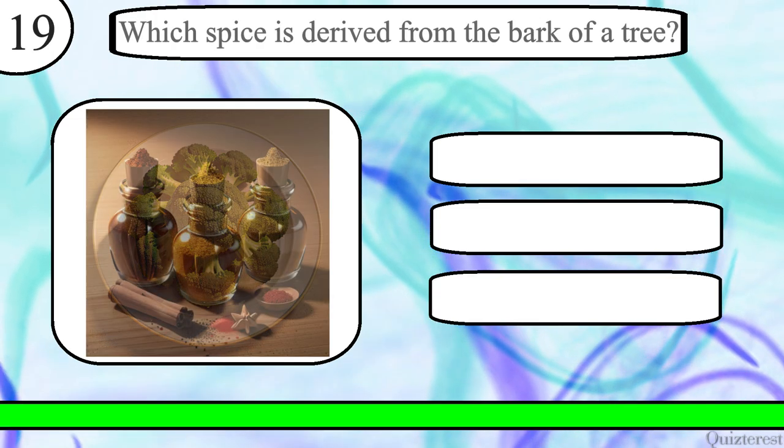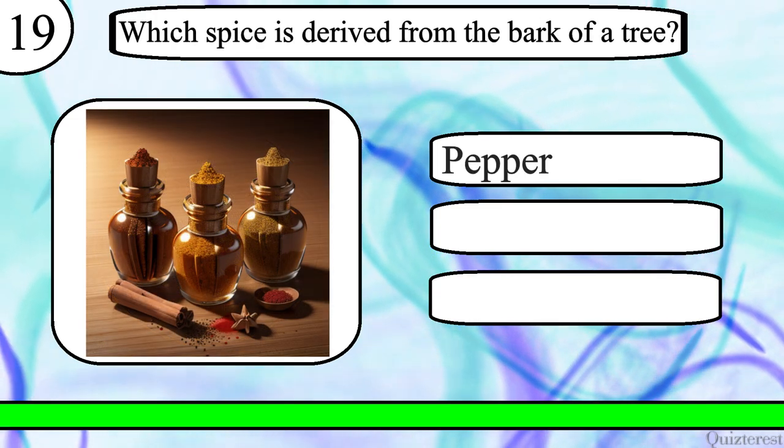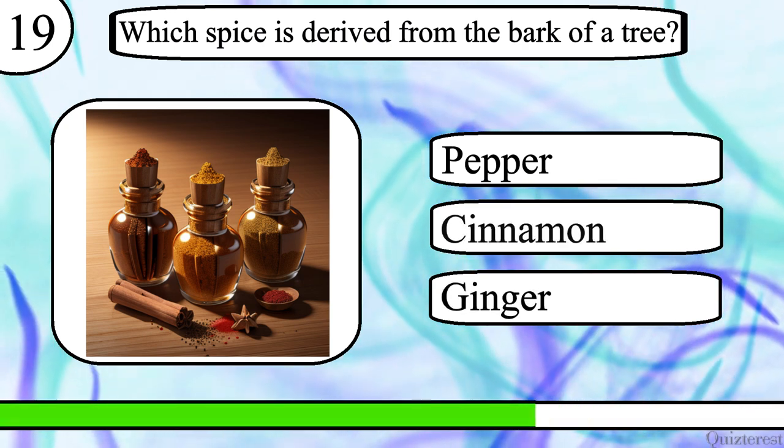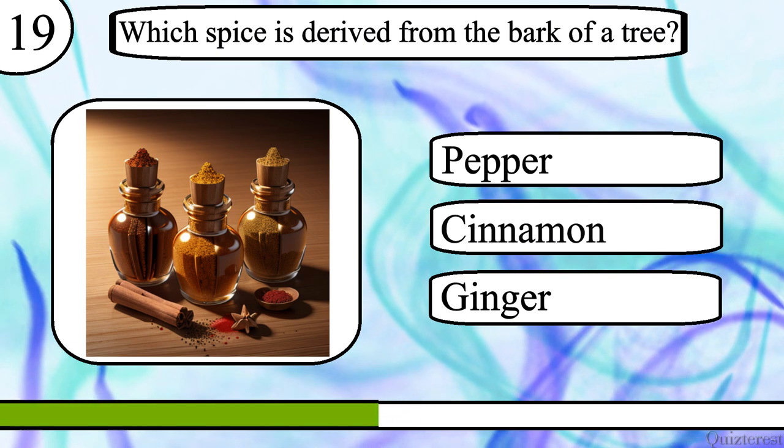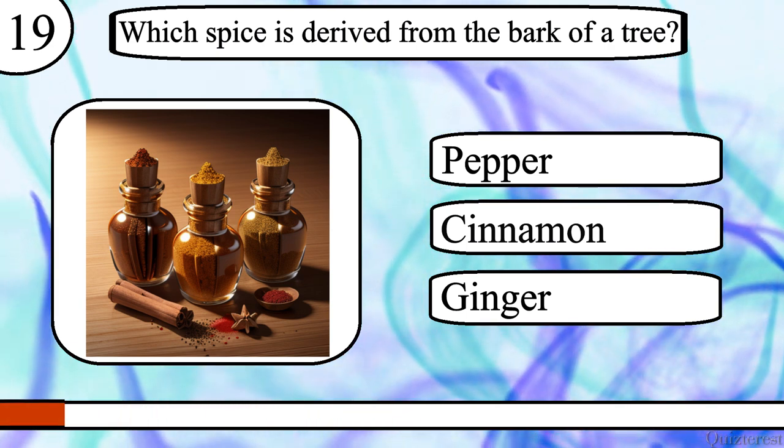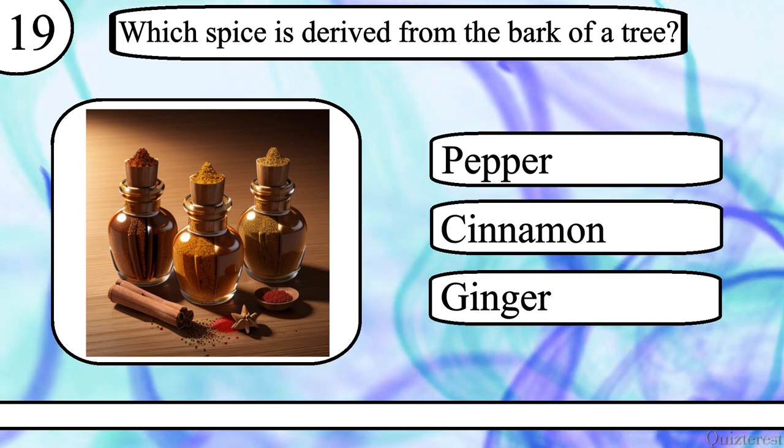Question 19. Which spice is derived from the bark of a tree? Pepper, cinnamon or ginger? The correct answer is cinnamon.